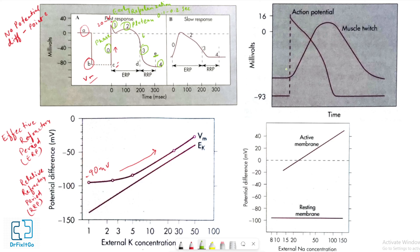Rapid depolarization in phase 0 occurs before force develops, and complete repolarization coincides approximately with peak force. The relaxation of muscle takes place mainly during phase 4 of the action potential. The duration of contraction parallels the duration of the action potential.